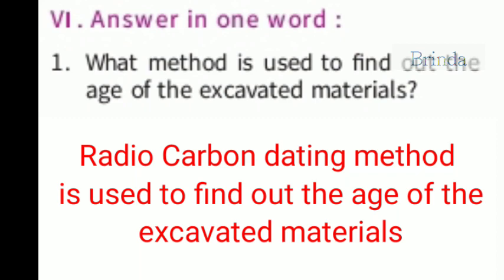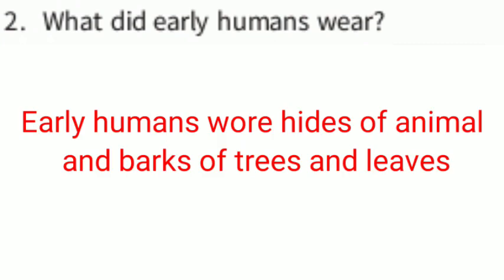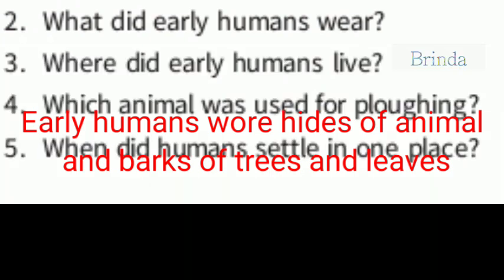The Radio Carbon Dating Method is used to find out how old the materials were. Early humans used hides of animals, barks of trees, and leaves as clothing. They did not wear dresses like us, but they wanted to cover themselves. So they used hides — that is, animal skin, like leather — and also barks of trees and leaves.